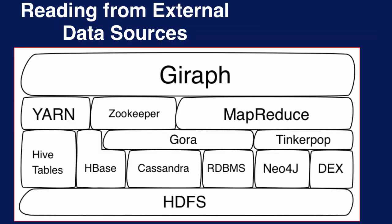As Giraph has matured, it has included many specialized wrappers to interoperate with compatible data sources. We can group them into three different categories. Group 1 interoperates with Hive and HBase — systems designed to give a higher-level data access or interface on top of MapReduce. Group 2 accesses relational systems like MySQL and Cassandra, but these systems are accessed indirectly through a software module called Gora. Gora uses a JSON schema to map the relational schema of the SQL database to a structure that Giraph can read.